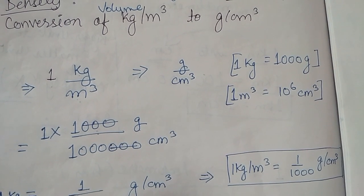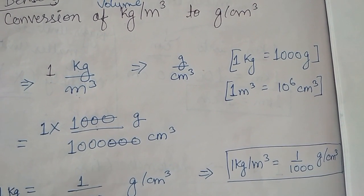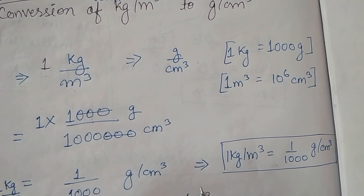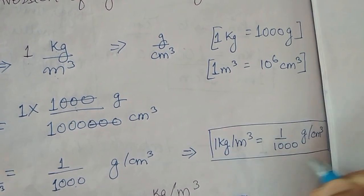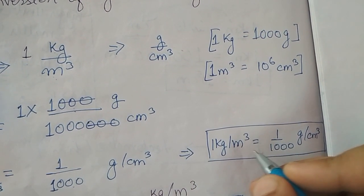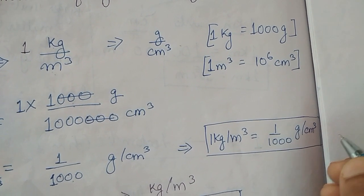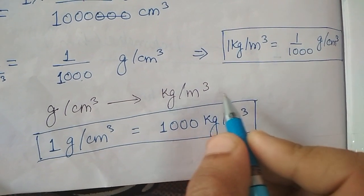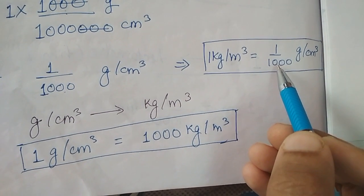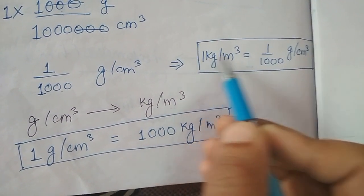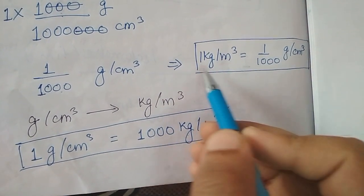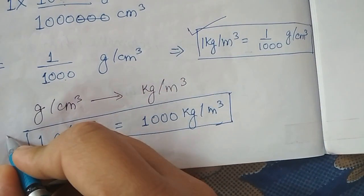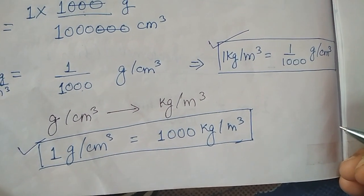Then we get one upon thousand gram per centimeter cube. It means that one kilogram per cubic meter is equal to 1/1000 gram per cubic centimeter. We have to remember this relation. Similarly, if you have to convert from gram per centimeter cube to kilogram per meter cube, you just send the thousand to the left-hand side, giving one gram per centimeter cube equals 1000 kilogram per meter cube. These two relations are very helpful in this chapter to solve the numericals.